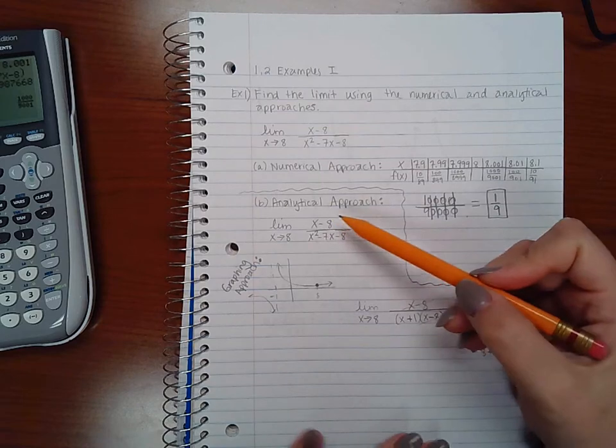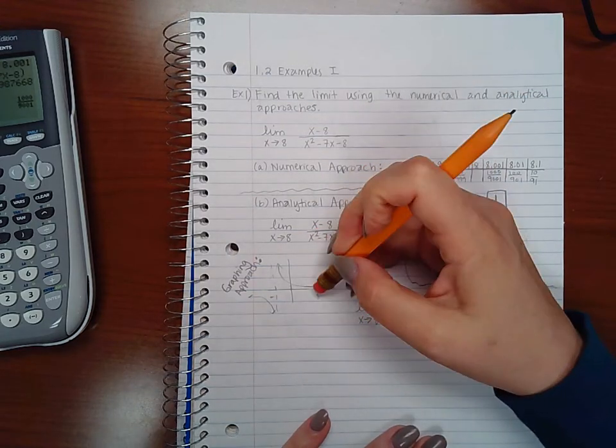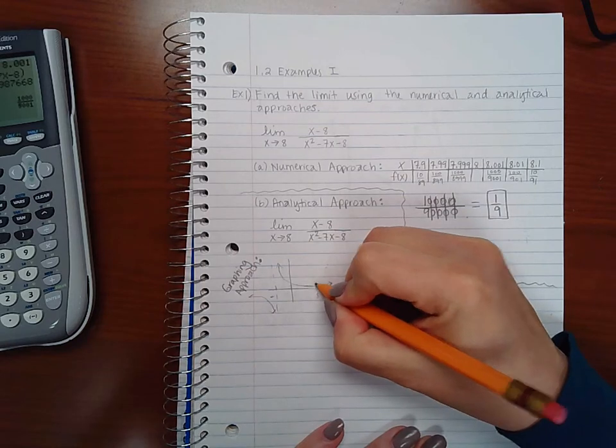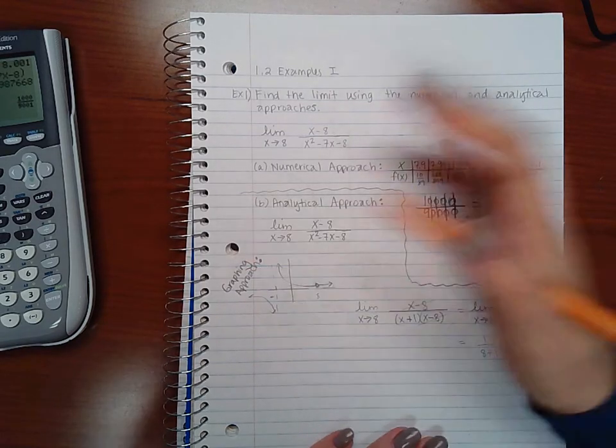Now what happens is if I draw this exactly the way it is, I have a hole right here when x is equal to 8 in my graph.